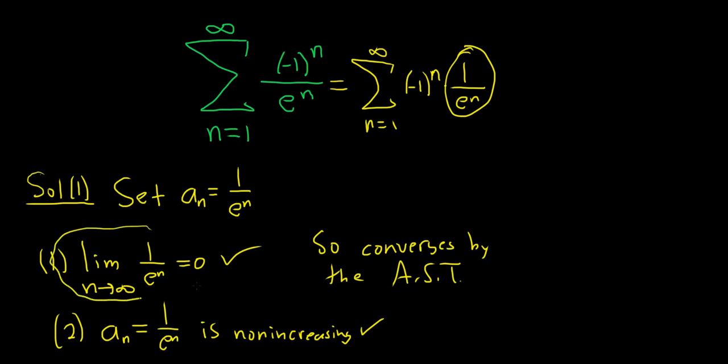Now, if the first condition fails, you can go back and use what's called the nth term test to show divergence. You can never say diverges by the alternating series test. The alternating series test only shows convergence.